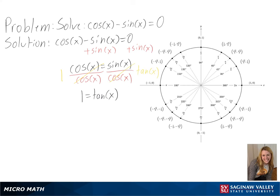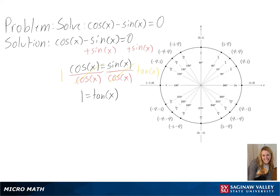Next, we can look at a unit circle to see where tangent does equal 1, and we will get pi over 4 and 5 pi over 4.